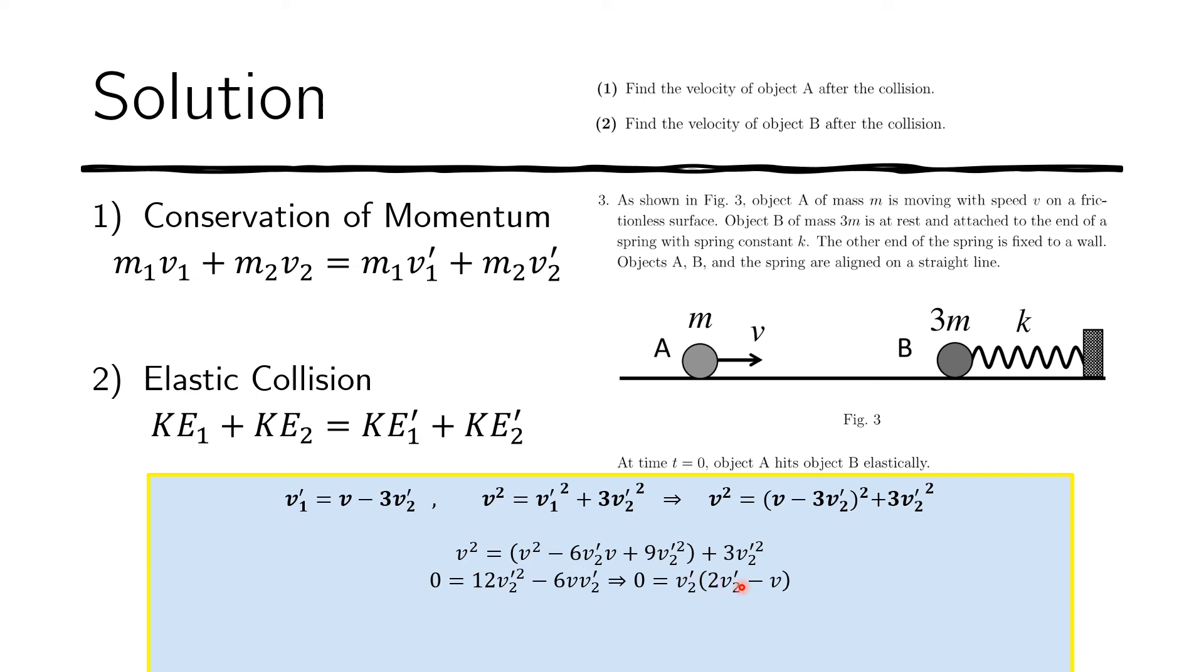One solution is v₂' equals 0. If this is the case, we use v₁' = v - 3v₂' to get v₁'. Substituting 0, we see that v₁' is just equal to v. Now, that's one case.